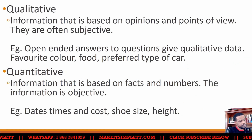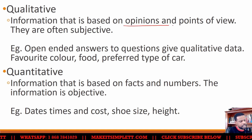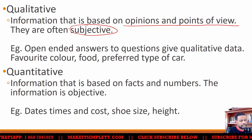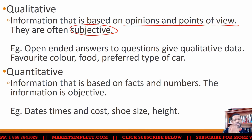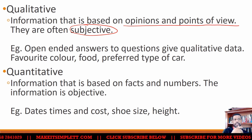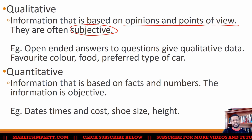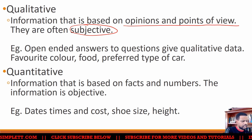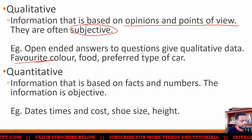Qualitative data is data that's based on opinions and points of view, and it's very subjective. For example: I think it looks good, I think the color is wonderful. Adjectives like beautiful, wonderful, happy — those kinds of things are qualitative. Favorite color, anything with 'favorite' — that's qualitative.